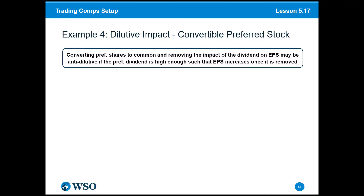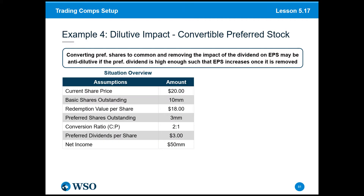Now that we know the key terms for conversion and treatment of convertible preferred stock, let's walk through an example and see whether this would convert and how we would think through this. The current price per share — the current trading price of the company we're evaluating — is $20 per share.